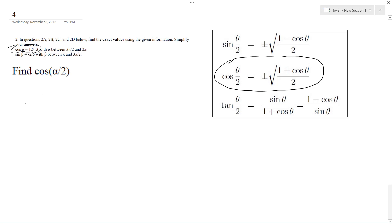The cosine of the half angle equals plus or minus the square root of 1 plus 12 over 13, all over 2. This ends up being the square root of 13 plus 12 over 13, divided by 2. So we get the square root of 25 over 26.